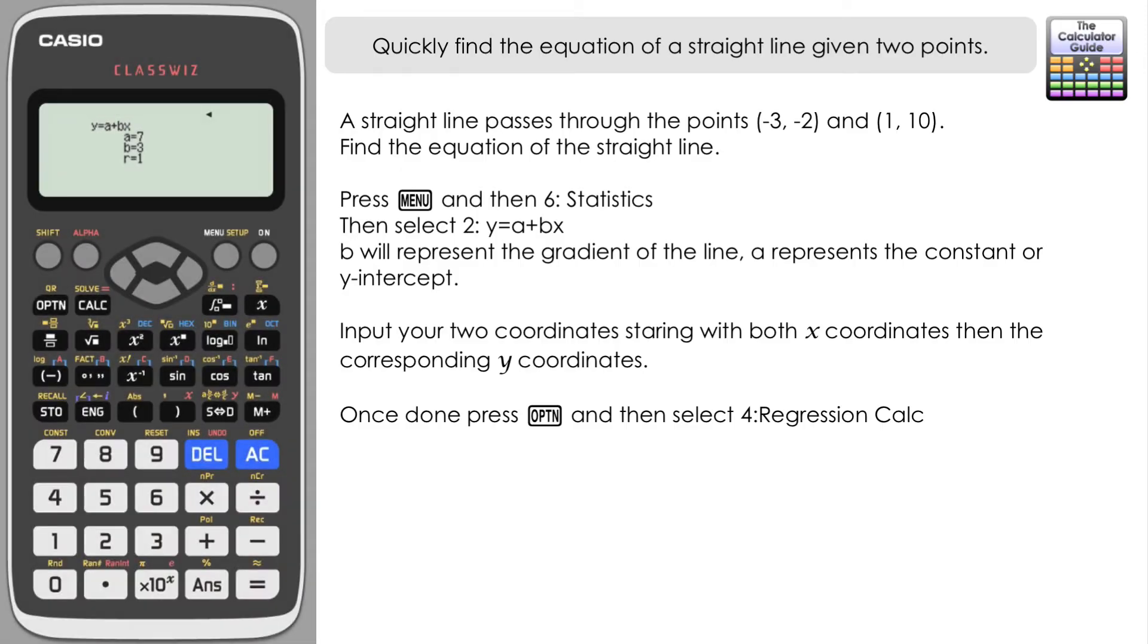Now what's useful for us is to look at a and b, and I'll explain about r in a second. Now our a is going to be our plus c, so that's going to be our y-intercept, so the y-intercept is 7. And b there is going to be our gradient, so our gradient is 3. So putting that into y = mx + c form, that means that the equation of the line will be y = 3x + 7.